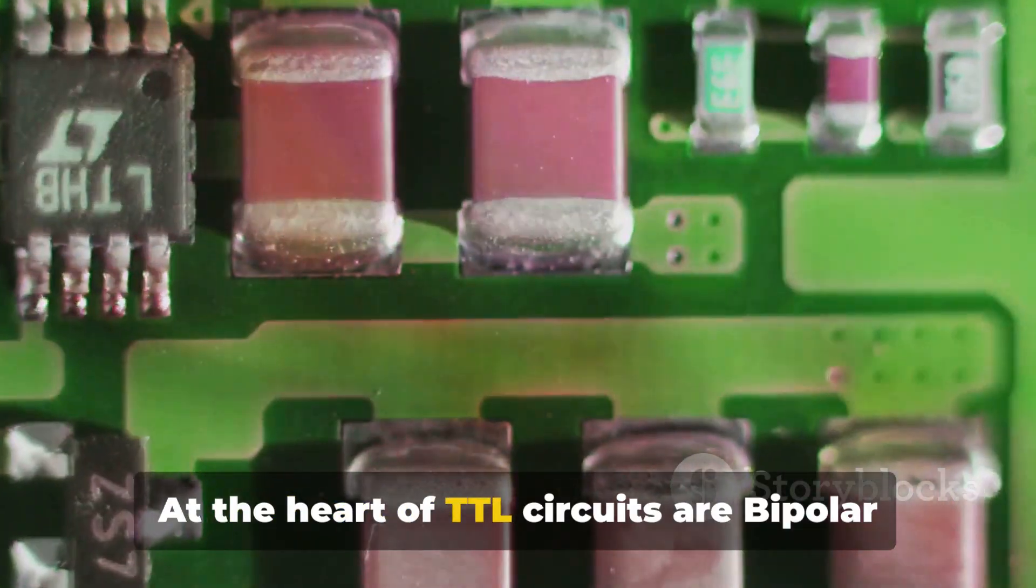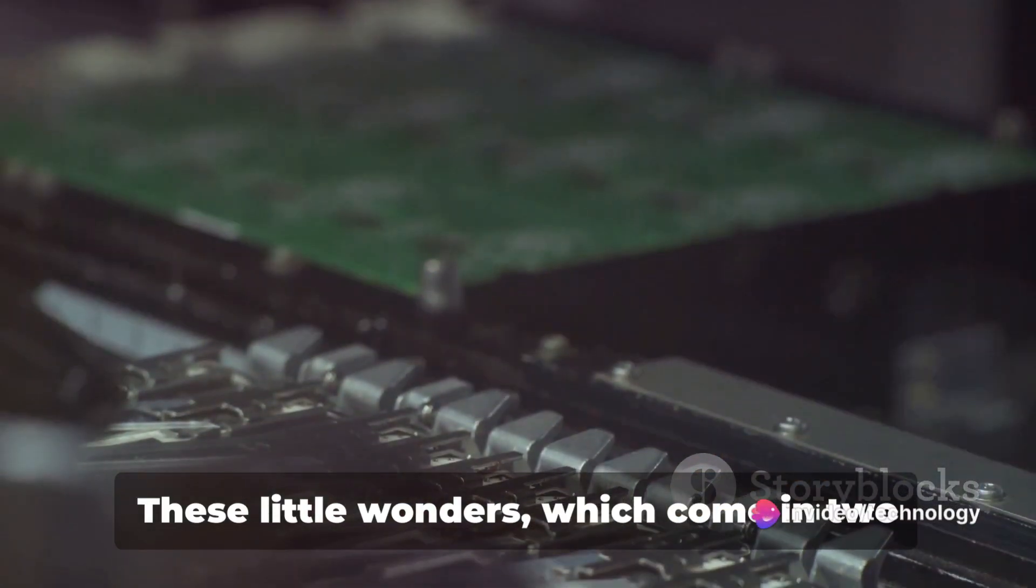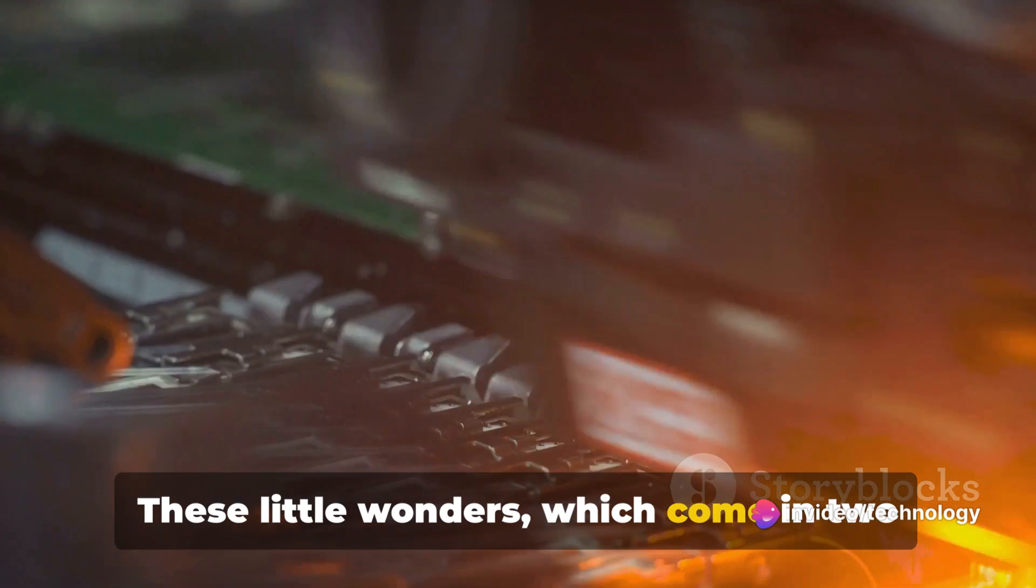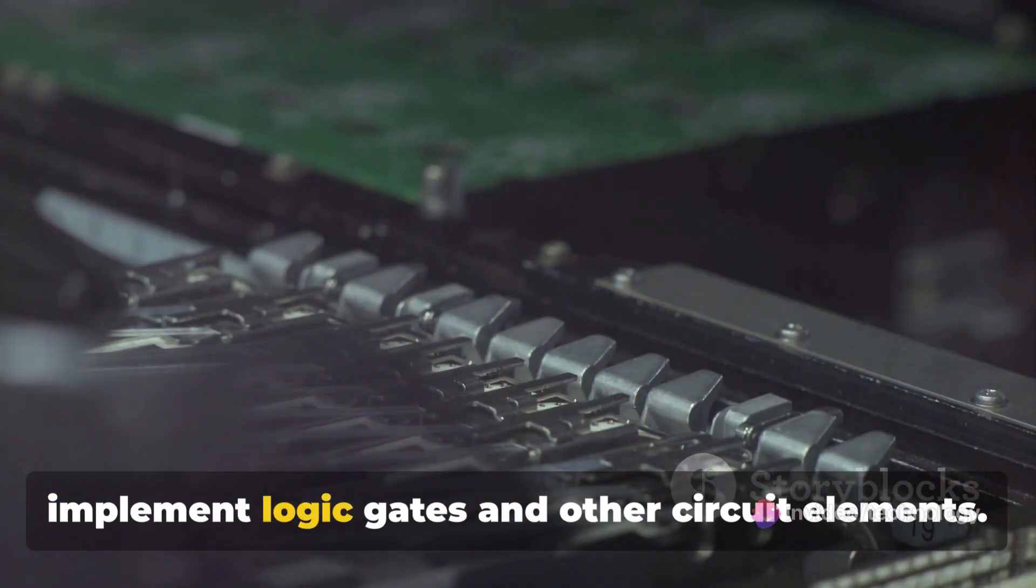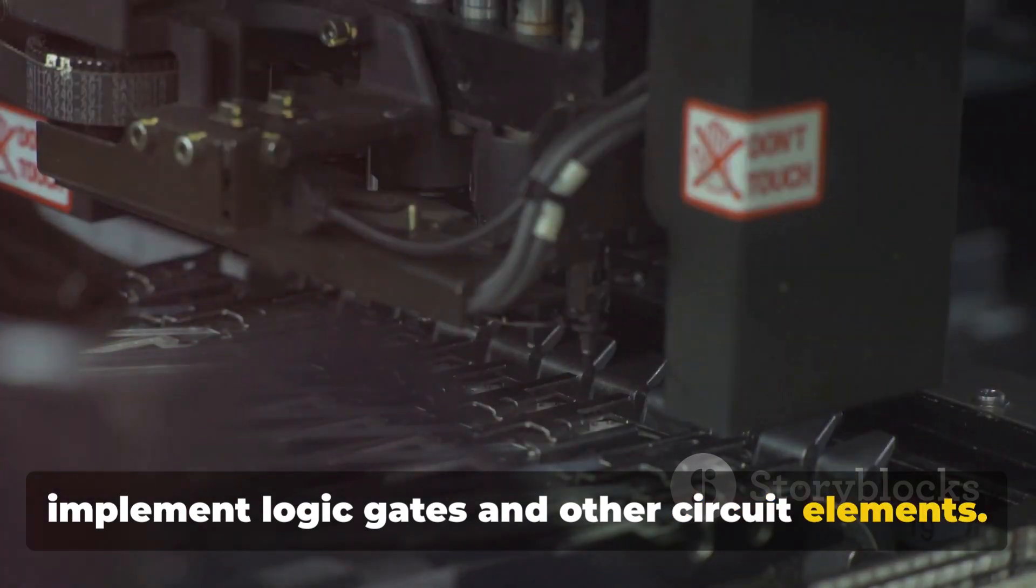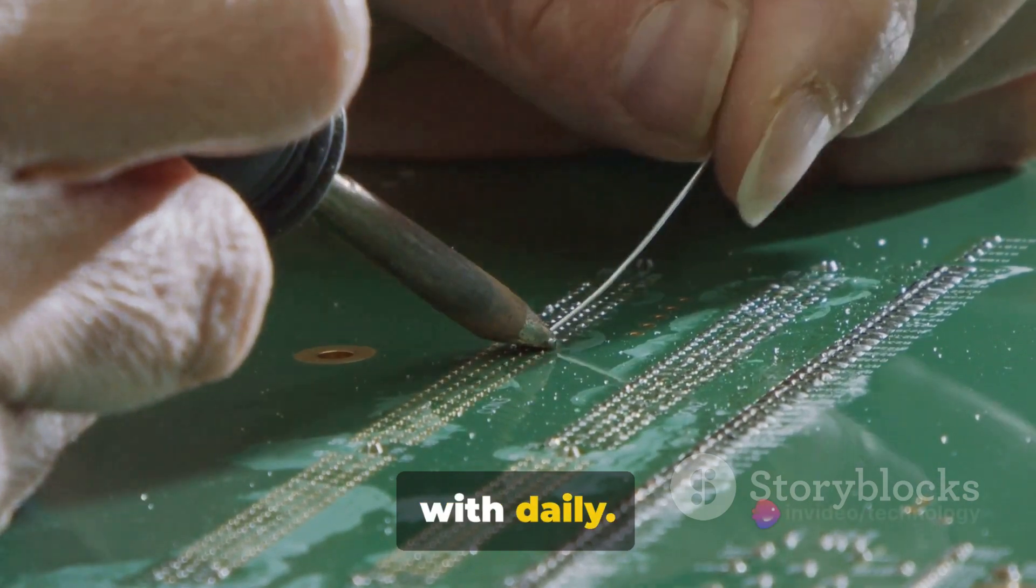At the heart of TTL circuits are bipolar junction transistors, or BJTs. These little wonders, which come in two flavors, NPN and PNP, are used to implement logic gates and other circuit elements. They are the building blocks that enable the complex digital worlds we interact with daily.